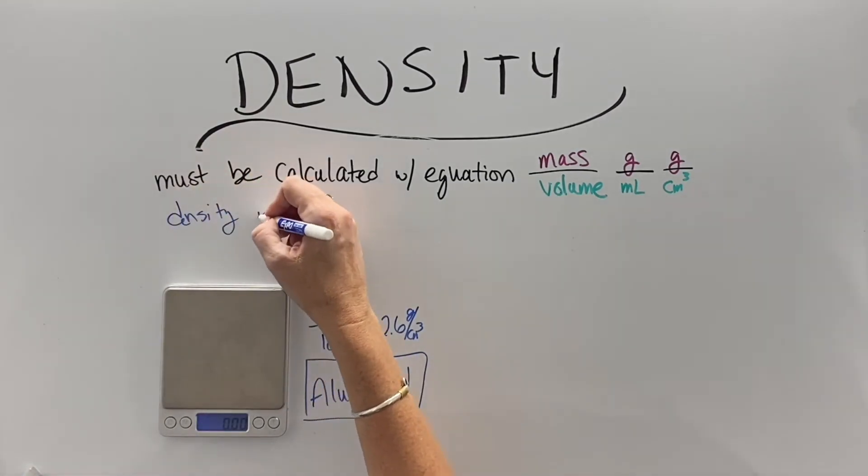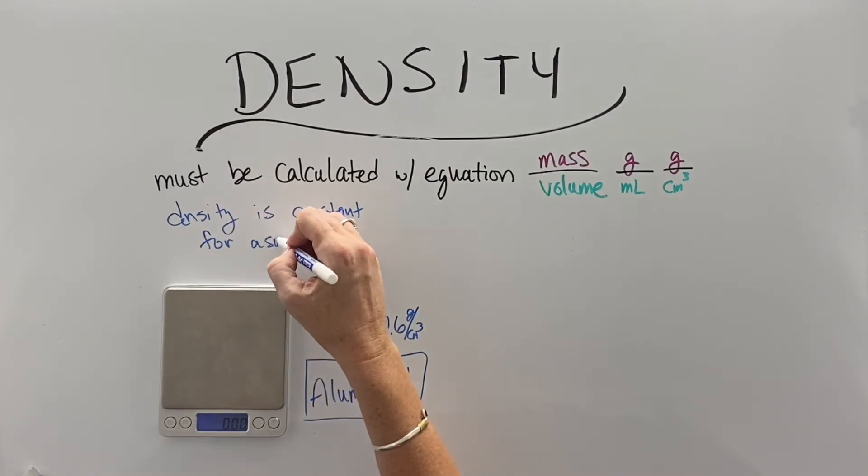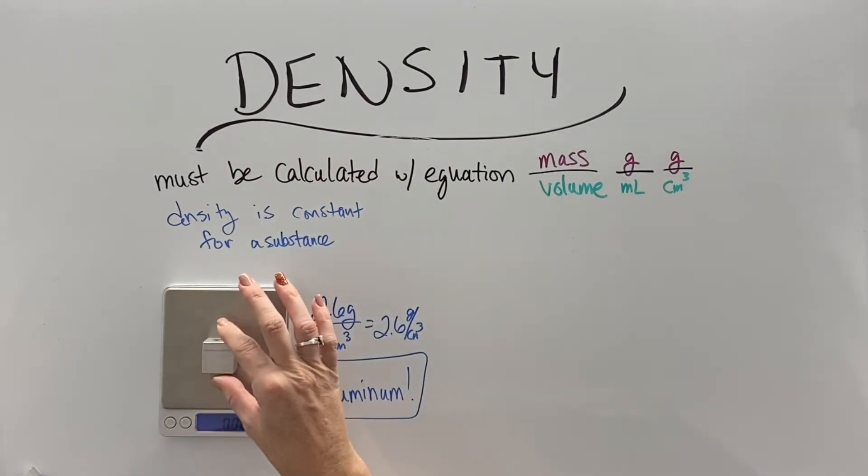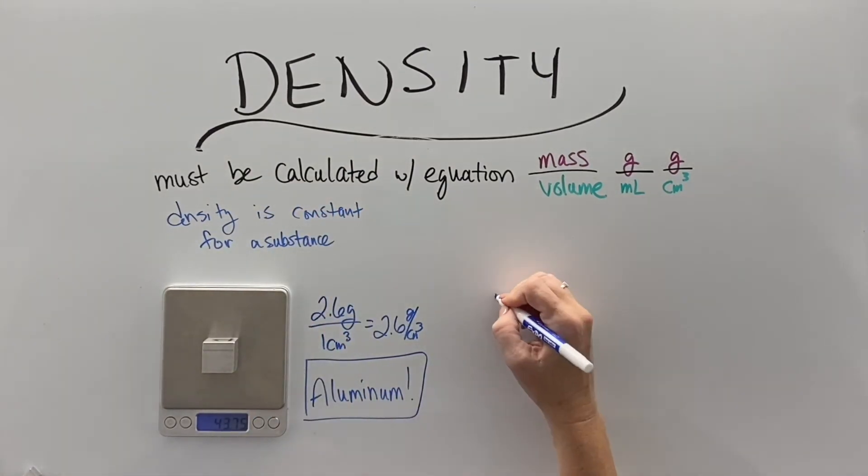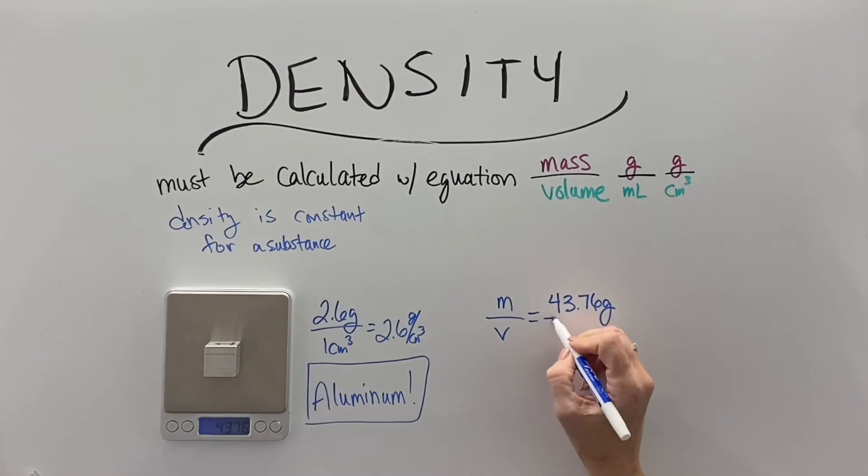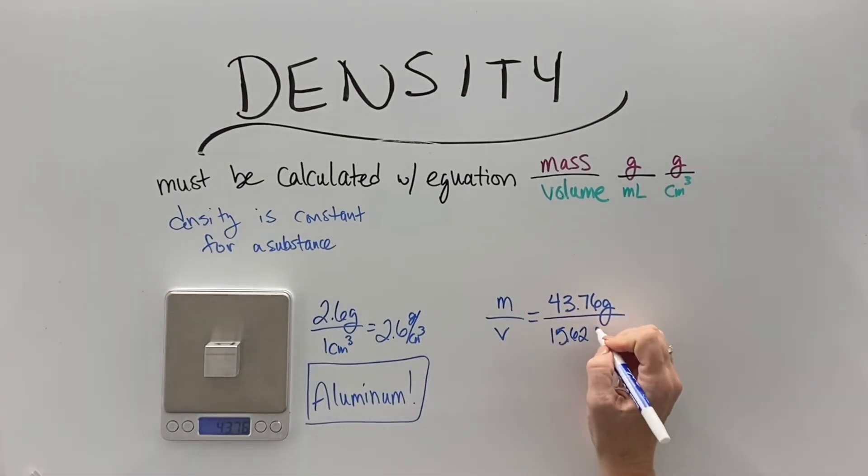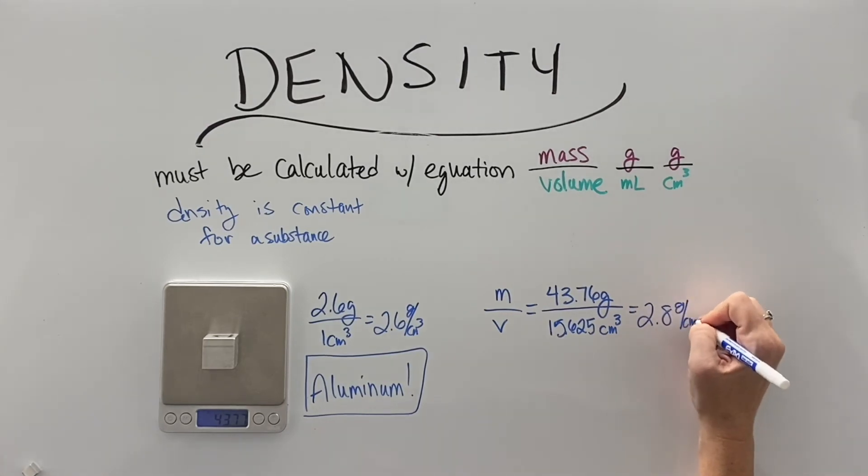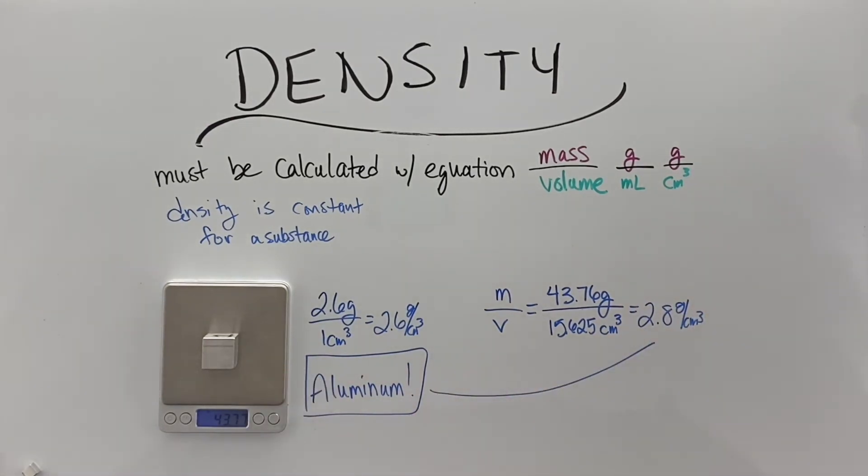And the density then, because it's a constant, can also be used to identify these substances. And so if I have another block of aluminum, then I should expect that the mass will increase by 2.6 grams for every extra cubic centimeter of volume. And indeed, this block is almost 16 cubic centimeters. So when I do some calculations, the densities are pretty darn close. Again, not perfectly honed blocks.